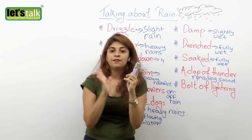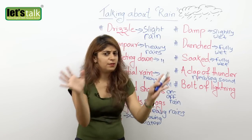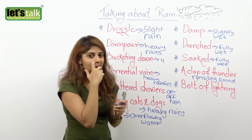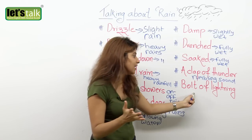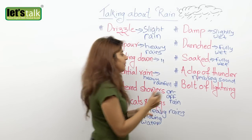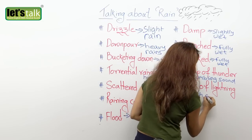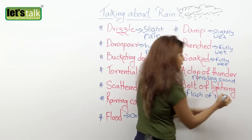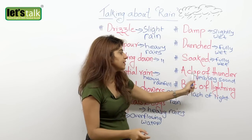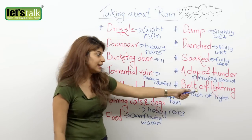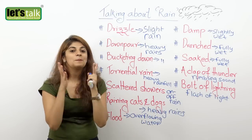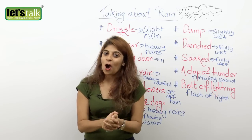And then you also have bolt of lightning. I think it's one of the most beautiful things in nature. Have you ever seen lightning? It is gorgeous — I have tried to click a photo but I have failed. A bolt of lightning is a flash of light that you see in the sky. And with lightning comes thunder as well. The moment you see a flash of light, within a few seconds you would hear a clap of thunder, because lightning is followed by thunder.